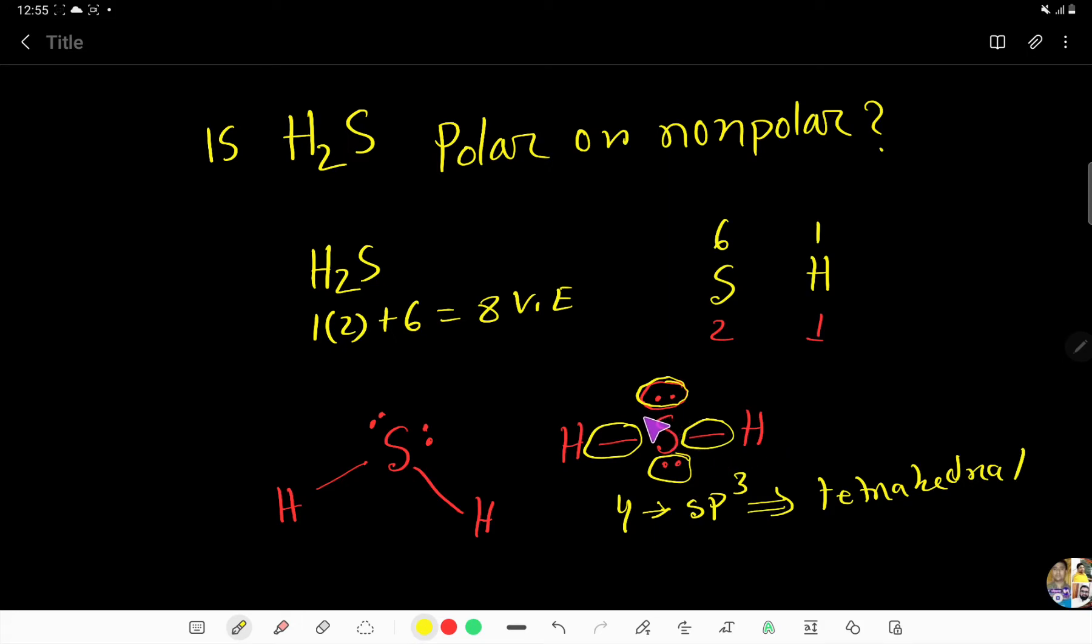But, according to VSEPR theory, that is, valence shell electron pair repulsion theory, we have to consider lone pair bond pair repulsion.